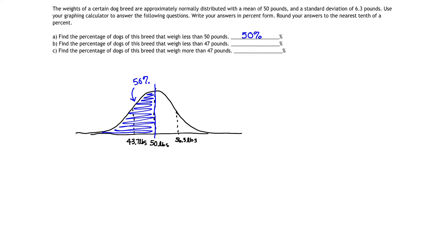And I don't need that percent because it's already there, so I could erase that percent. Okay, perfect. So let's look at question B. Find the percentage of dogs that weigh less than 47 pounds.